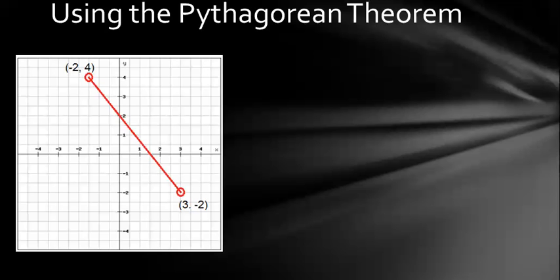Okay, so now it's your turn to try. Go ahead and use the Pythagorean theorem to find the distance between these two points. So pause the video and then try it. Okay, so did you get c is about 8 units? If so, you're doing great. If not, recheck your steps and try again.